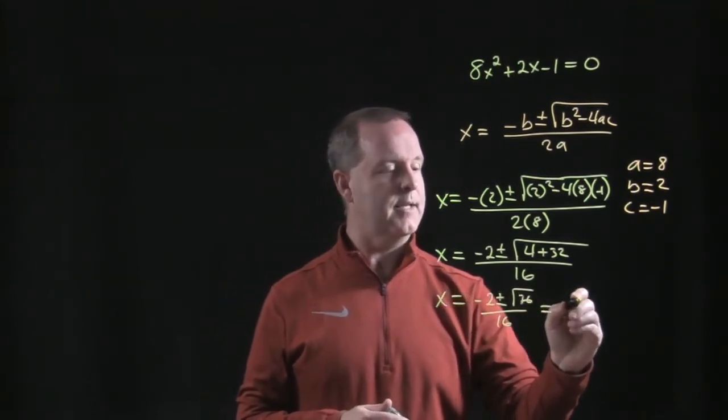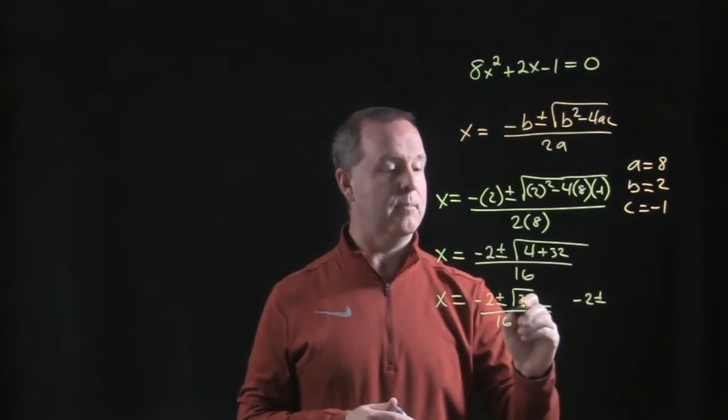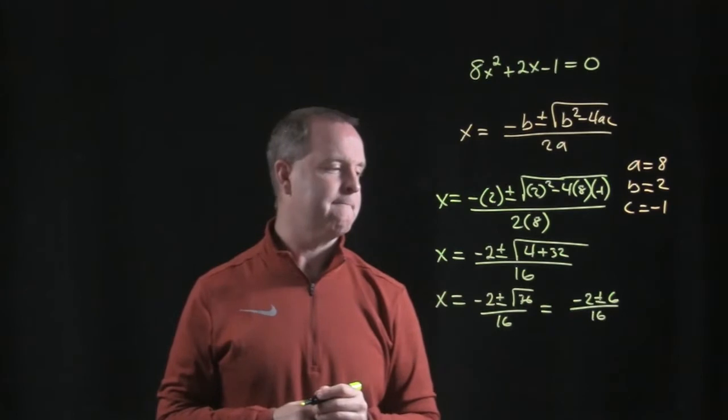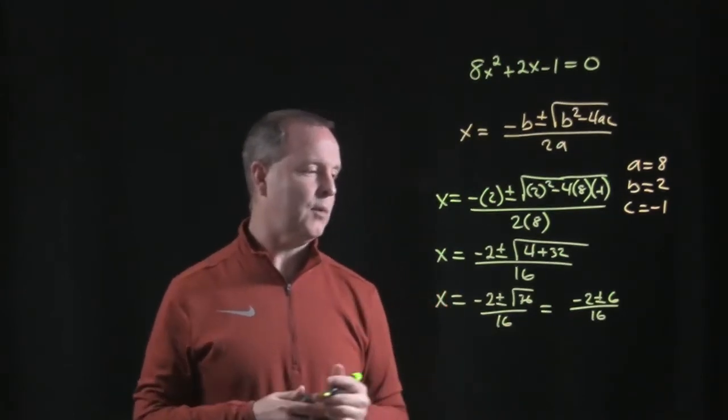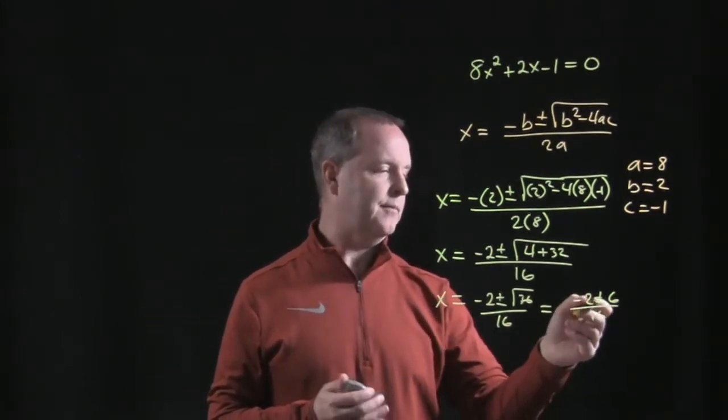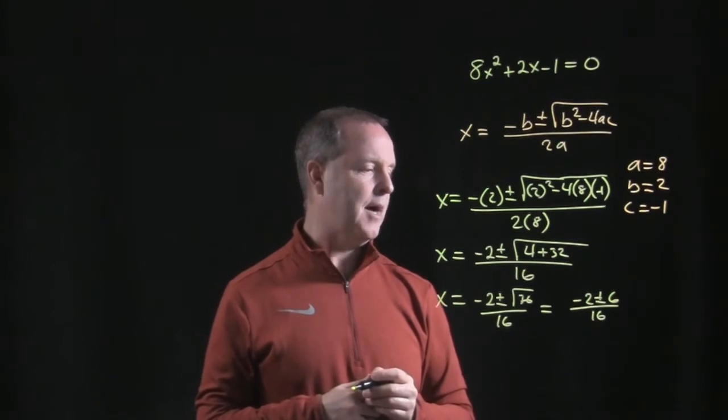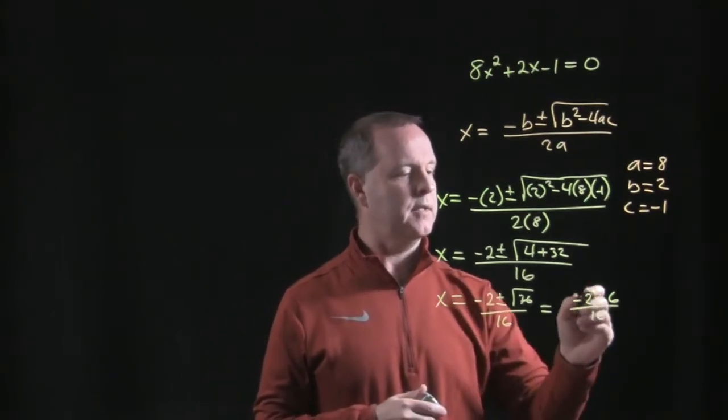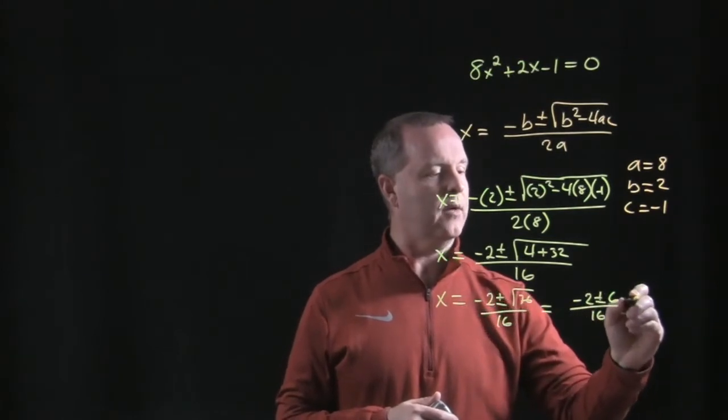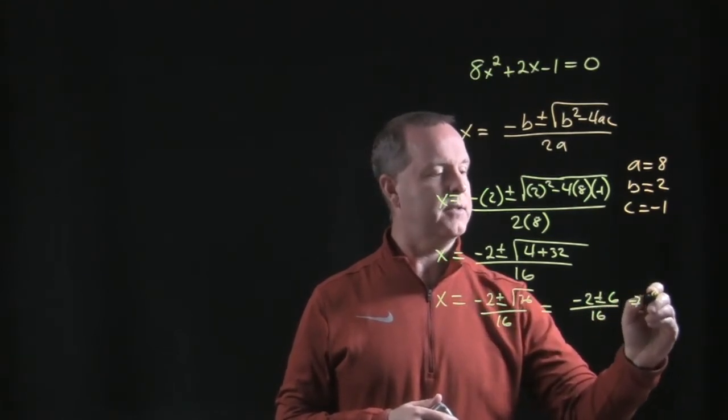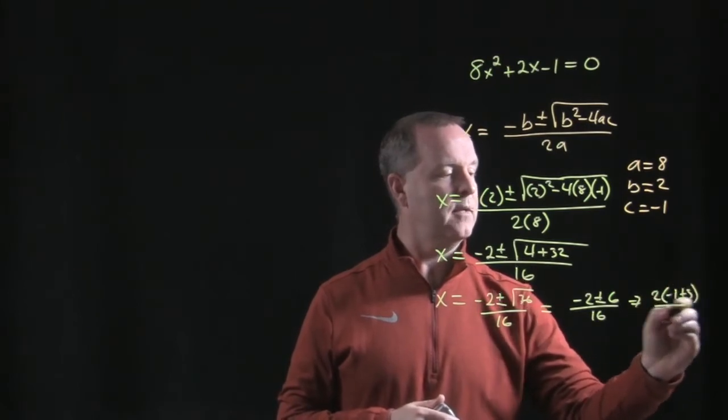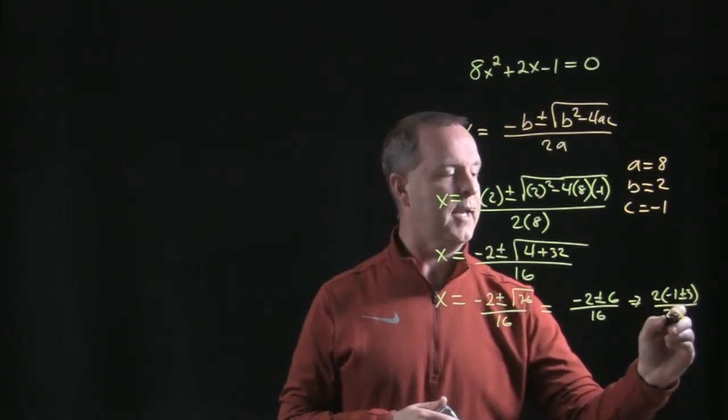Equals negative 2, plus or minus 6, all over a 16. We have two solutions there. I can probably, let's factor out a 2 from everywhere first. And so I can rewrite this as a 2 times a negative 1, plus or minus a 3, all over a 2 times an 8.